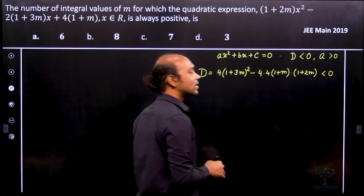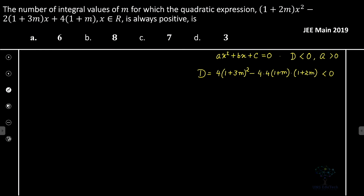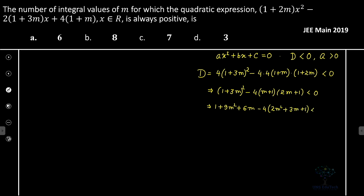So we have 4(1 + 3m)² − 4(m + 1)(2m + 1) < 0. Expanding (1 + 3m)² gives 1 + 9m² + 6m. Then 4(m+1)(2m+1) expands to 4(2m² + 3m + 1) = 8m² + 12m + 4. So the expression becomes 9m² + 6m + 1 − 8m² − 12m − 4 < 0.